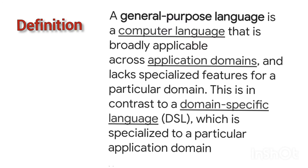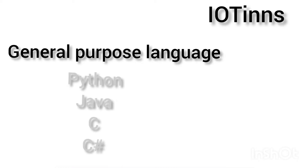A general purpose language is a computer language that is broadly applicable across application domains, unlike a specialized language built for a particular domain. A general purpose language can be used in many domains and supports many different features.